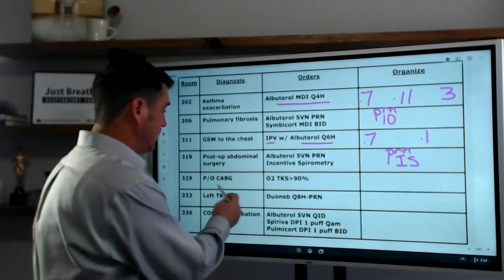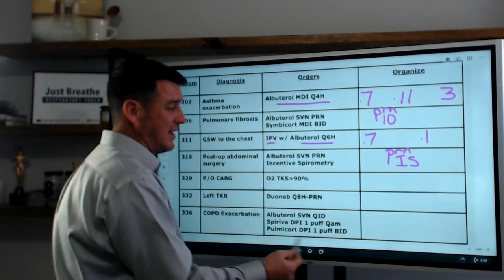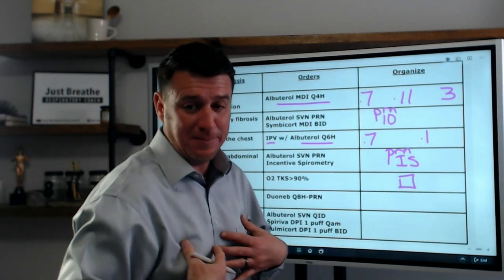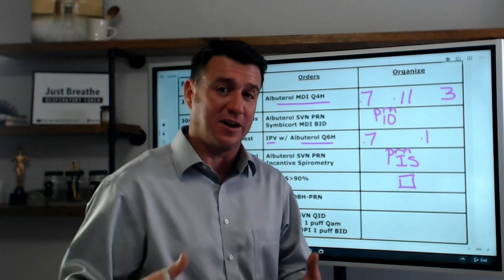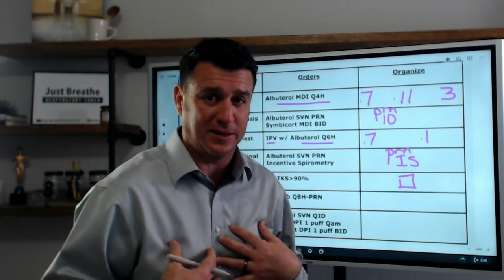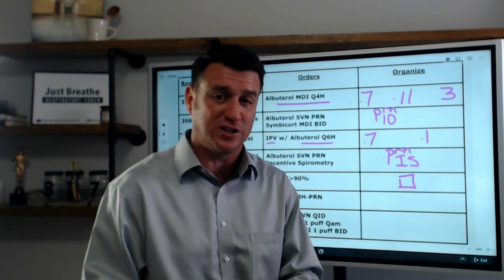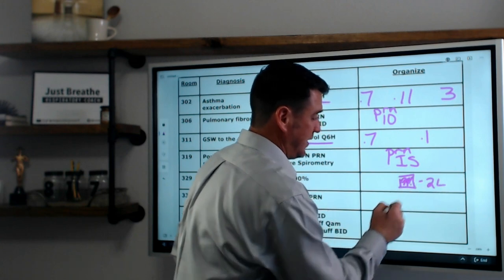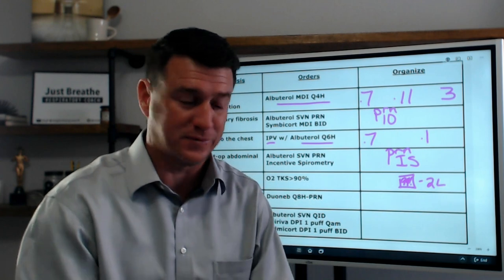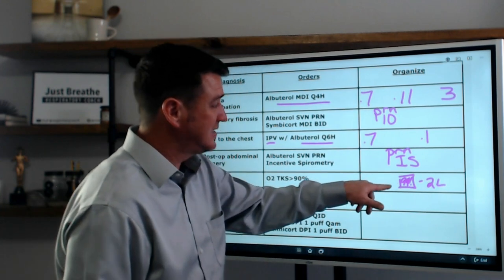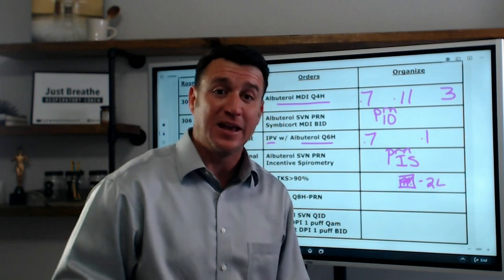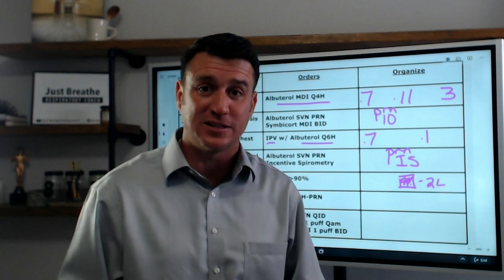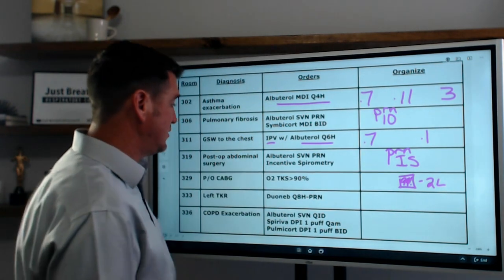The next patient is a post-op CABG patient with O2 to keep sat greater than 90%. I'm going to put a box here, which means I need to check their oxygen. In that box I'll put their saturation and their liter flow — so 94% on two liters. This oxygen check will fall sometime in between therapies and scheduled medications.